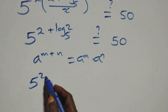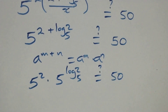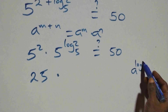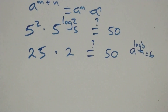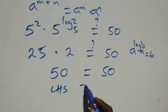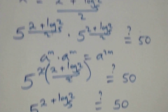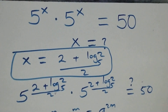We have 5 raised to power (2 plus log base 5 of 2), which gives us 25 times 5 raised to power log base 5 of 2. Since a raised to power log base a of n equals n, this gives 25 times 2, which equals 50. This equals 50 on the right-hand side, so left-hand side equals right-hand side. Therefore, x equals (2 plus log base 5 of 2) all over 2 satisfies the given problem. Thank you for watching, don't forget to subscribe for more videos. See you next lesson, bye.